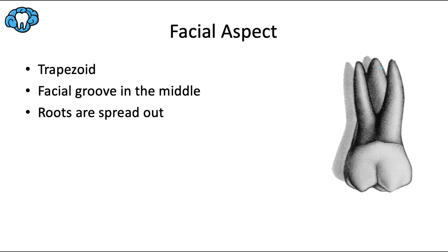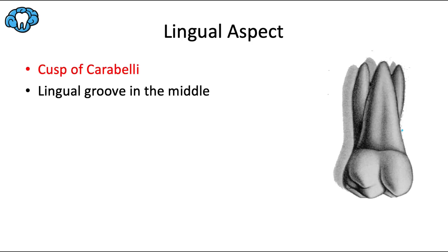The roots of this tooth are 'bow-legged' or spread out — they diverge from each other as you move from the root trunk toward the apex. In the second molar, by contrast, the roots are more parallel or convergent.